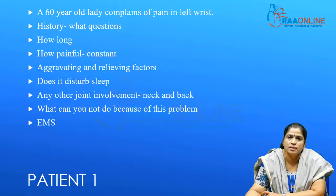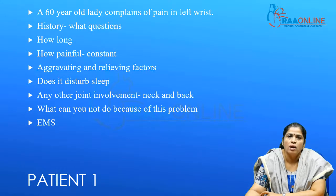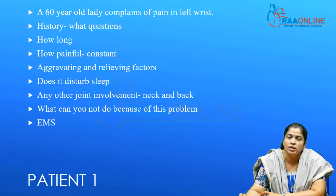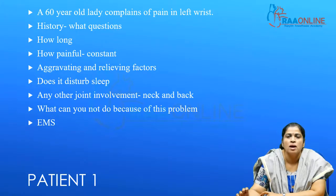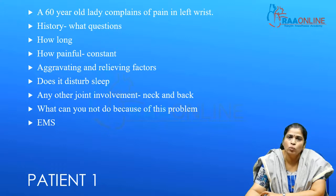The first patient is a 60-year-old lady. She complains of pain in her left wrist. In this session, I am going to concentrate only on history and tell you how to try to arrive at a possible differential diagnosis using history alone. So what questions can you ask? The first one would be: how long has she had the pain? This lady has had pain for about three days.